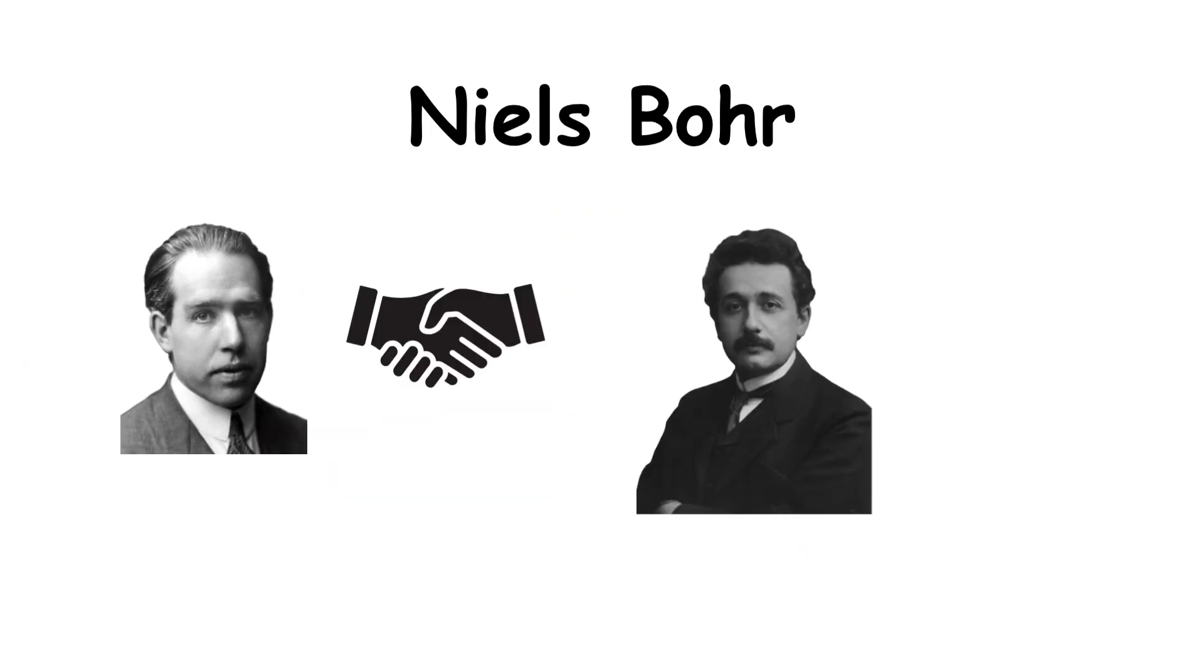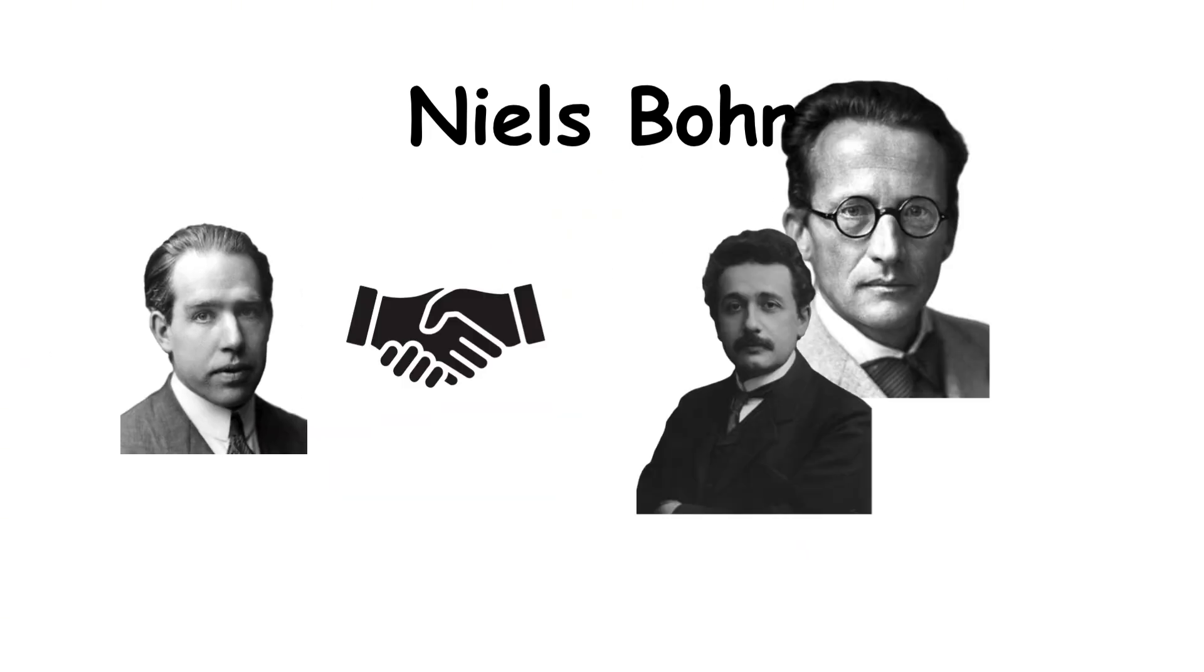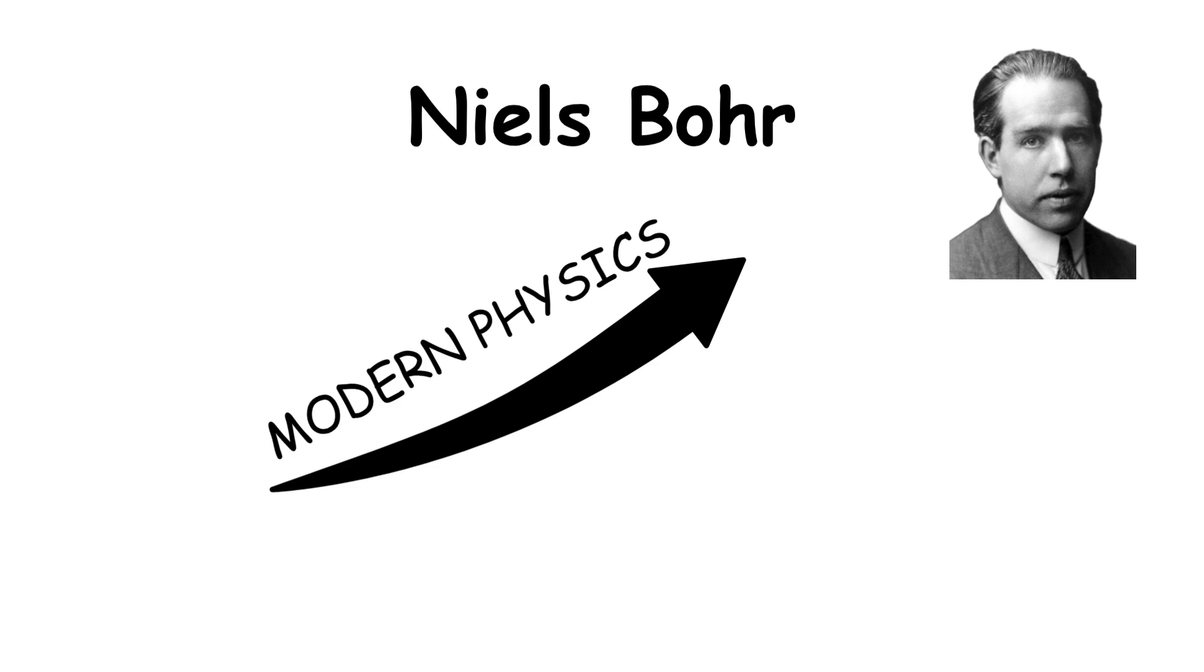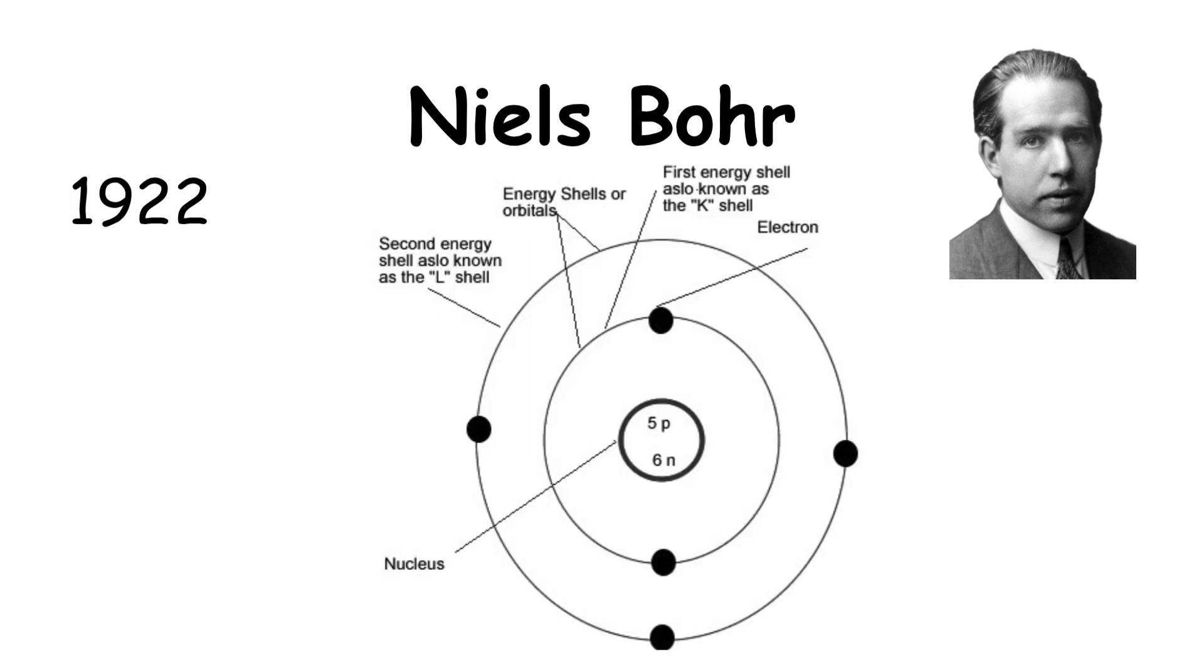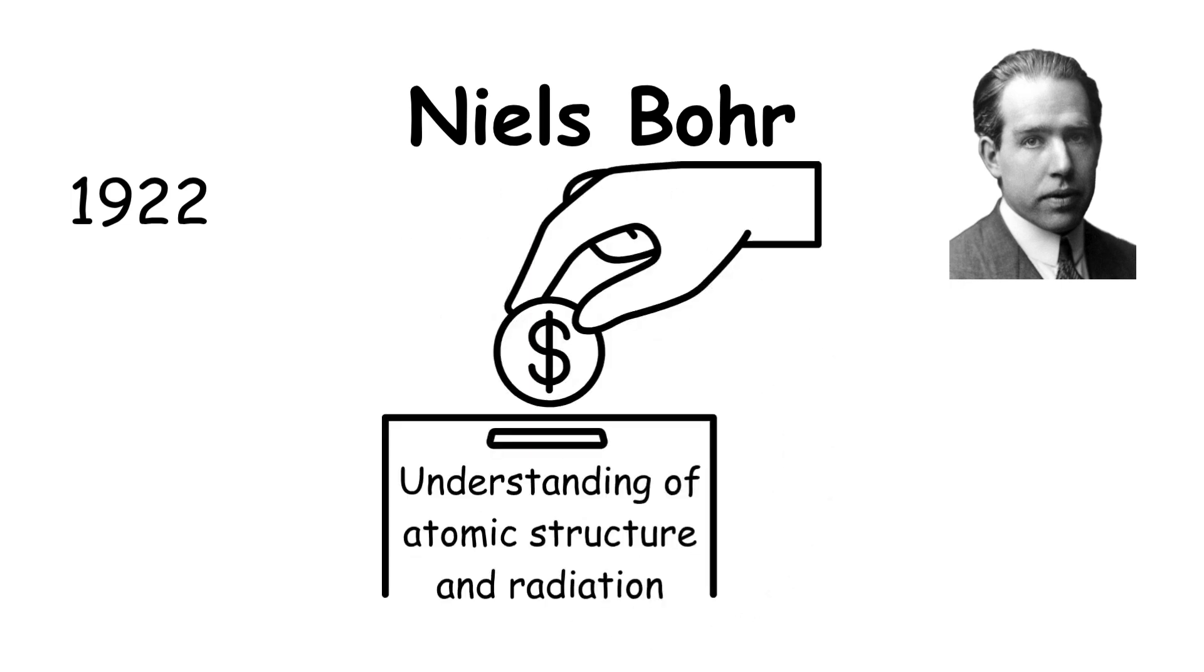Bohr worked closely with Einstein, Schrödinger, and Heisenberg during the rise of modern physics. In 1922, he won the Nobel Prize in physics for his atomic model and contributions to our understanding of atomic structure and radiation.